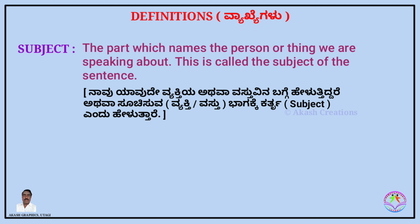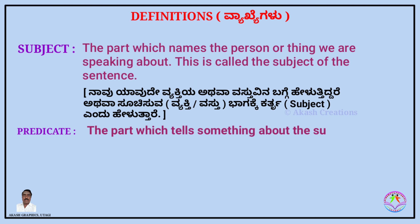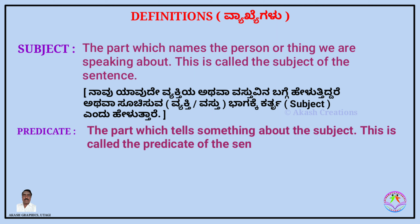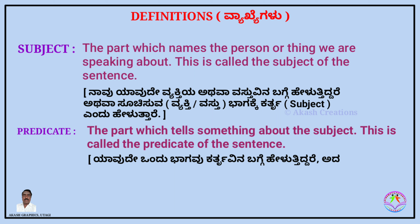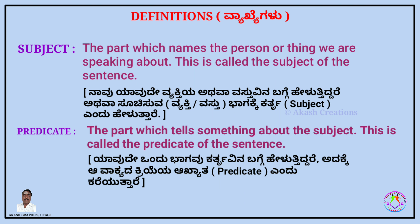Now we see the definition of predicate. The part which tells something about the subject — this is called the predicate of the sentence. In Kannada: yawadayya bhagavu karthru yandu bagi hiru tiddare, adakke yawadayya kriya akata andhari predicate yandu karibu ttare.